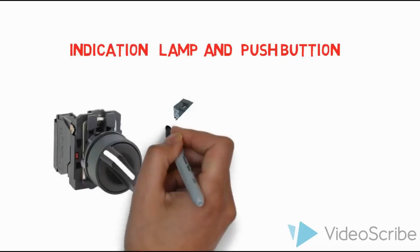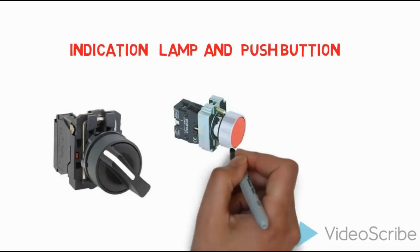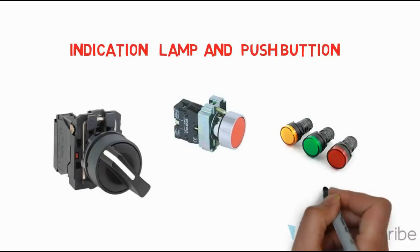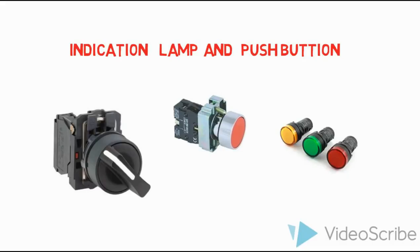Next are indication lamps and push buttons. Indication lamps show on and off status. Push buttons are used to turn on and off. There are hand-off-auto push buttons with two-position and three-position types. This control is important for the panel. Indication lamps show start, on, and off states.